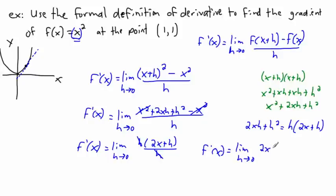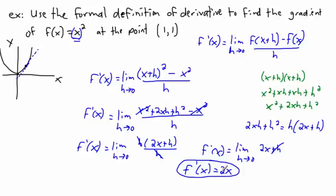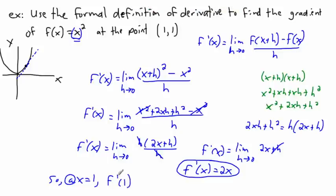Now I can make h equal to zero. As h approaches 0, (2x + h) becomes just 2x. So f'(x) = 2x. This is important — it's not my final answer yet, but it tells me that the gradient of this graph at any point is just the x value multiplied by 2. So at x = 1: f'(1) = 2 × 1 = 2.